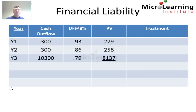Finally in year 3 we write a total check for $300,000 for interest, but additionally $10 million to redeem the bond at par at the end of year 3. So this total $10,300,000 must be discounted at 8% after three years by a factor of 0.79, giving us a present day equivalent value of $8.137 million.